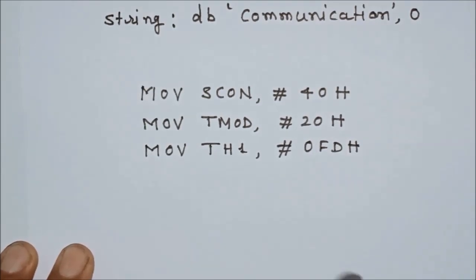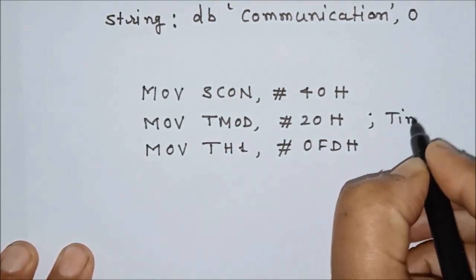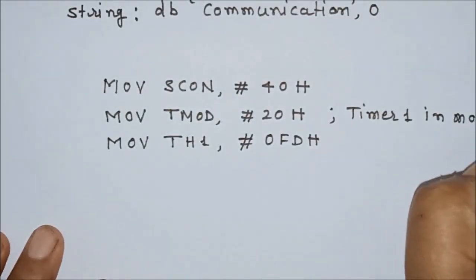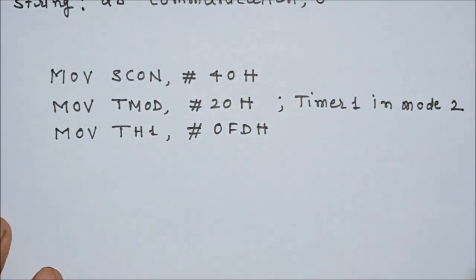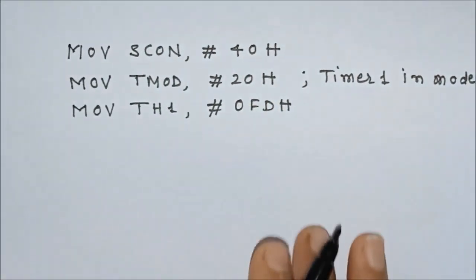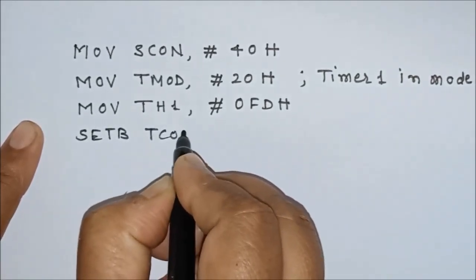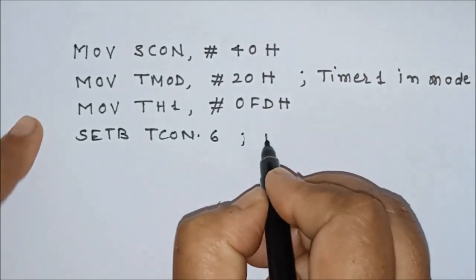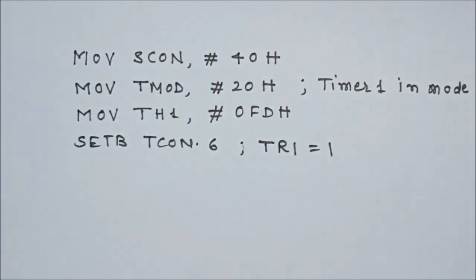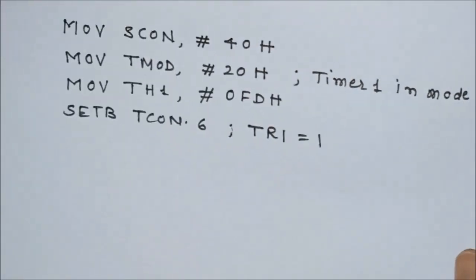After initialization, we start Timer 1. We are using Timer 1 in mode 2 to generate the clock signal for the baud rate. To start it, we write the instruction: SETB TCON.6. TCON.6 is the TR1 bit, so by setting it to 1, Timer 1 starts and begins generating the clock signal required for the baud rate.